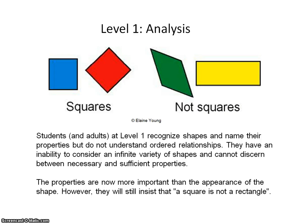Level 1 is Analysis. Students and adults at level 1 can recognize basic shapes and name their properties, but they don't understand the ordered relationships between shapes or properties. They are not able to consider an infinite variety of shapes, such as all possible triangles, and they cannot discern between the necessary and sufficient properties for each shape. Properties are now more important than just the appearance of the shape; however, they will still insist that a square is not a rectangle.